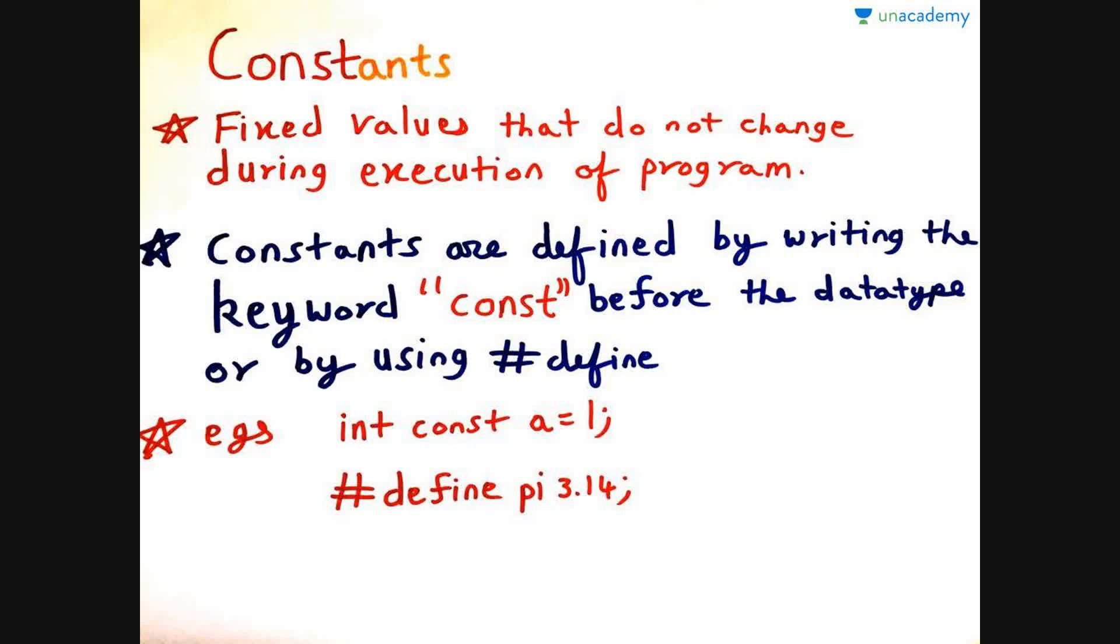Now, let's move to constants. Just as the name suggests, constants are fixed values which do not change during the execution of the program. For making a constant, we write the keyword const before the data type or by using hash define. Examples are int const a equals 1, or hash define pi equals 3.14.